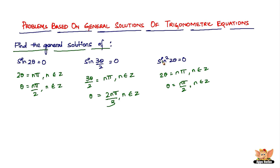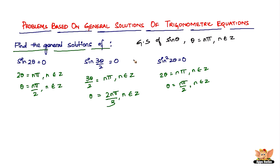Do not worry about whether it's sine square or sine cube or whatever it is — you just have to focus on the angle that is unknown and find the value of theta. For your reference: the general solution of sine theta equal to 0 is theta equals n pi, where n belongs to integers. So for any expression, just set that expression equal to n pi and solve for theta.